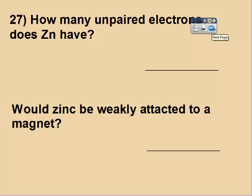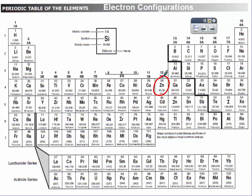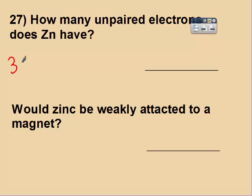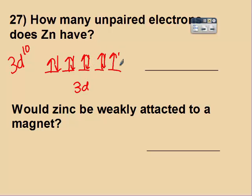Okay, one more together. Zinc is located here. Its last electron is in the d's. It would be 3d10. Just like the last one, d, I have 5 orbitals, and I have 10 electrons filling them. So I have 0 unpaired electrons, and so it would be diamagnetic, and so it would not be attracted to a magnet.